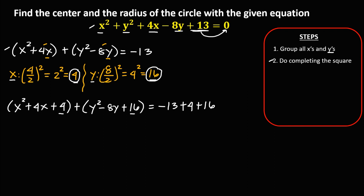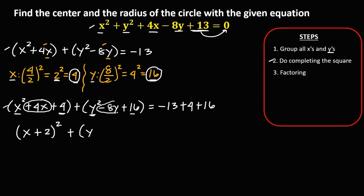After completing the square, apply factoring. For x: x squared factors as x times x; since the middle term is positive, so plus, and factors for 4 are 2 squared, so (x + 2) squared. Then for y: y times y; since the middle term is negative, so minus, and factors for 16 are 4 squared, so (y − 4) squared. Then equals — simplify: negative 13 plus 4 is negative 9, and negative 9 plus 16 is positive 7.